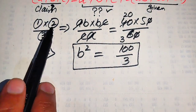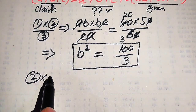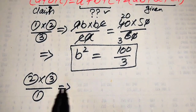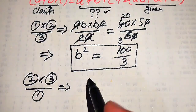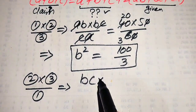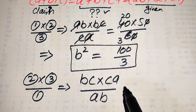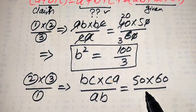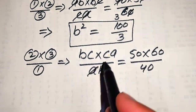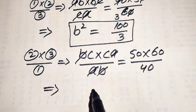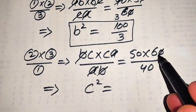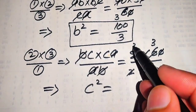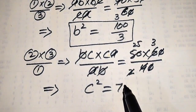In the same pattern we find C square. We multiply equation number 2 with equation number 3, divided by equation number 1. The left-hand side is BC multiplied by CA divided by AB, equals 50 multiplied by 60 divided by 40. A cancels with A and B cancels with B, leaving C times C equals C square. This gives us 75, which is the value of C square.